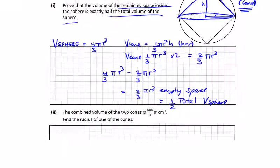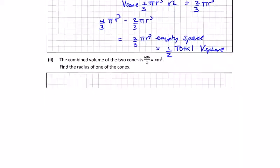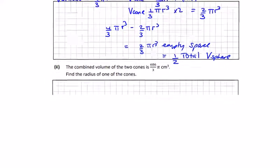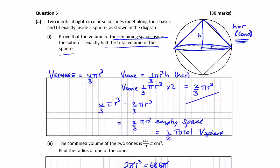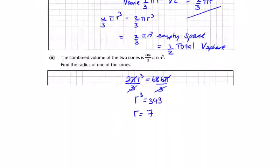Now we're told the combined volume of the two cones is 686 over 3 pi centimeters cubed. So that's our two cones, two thirds pi r cubed is equal to 686 pi over 3. And that was two thirds pi r cubed, so the threes cancel, the pis cancel, and we divide by two. We get r cubed is equal to 343, and the cube root of 343 is seven. Just seven units.